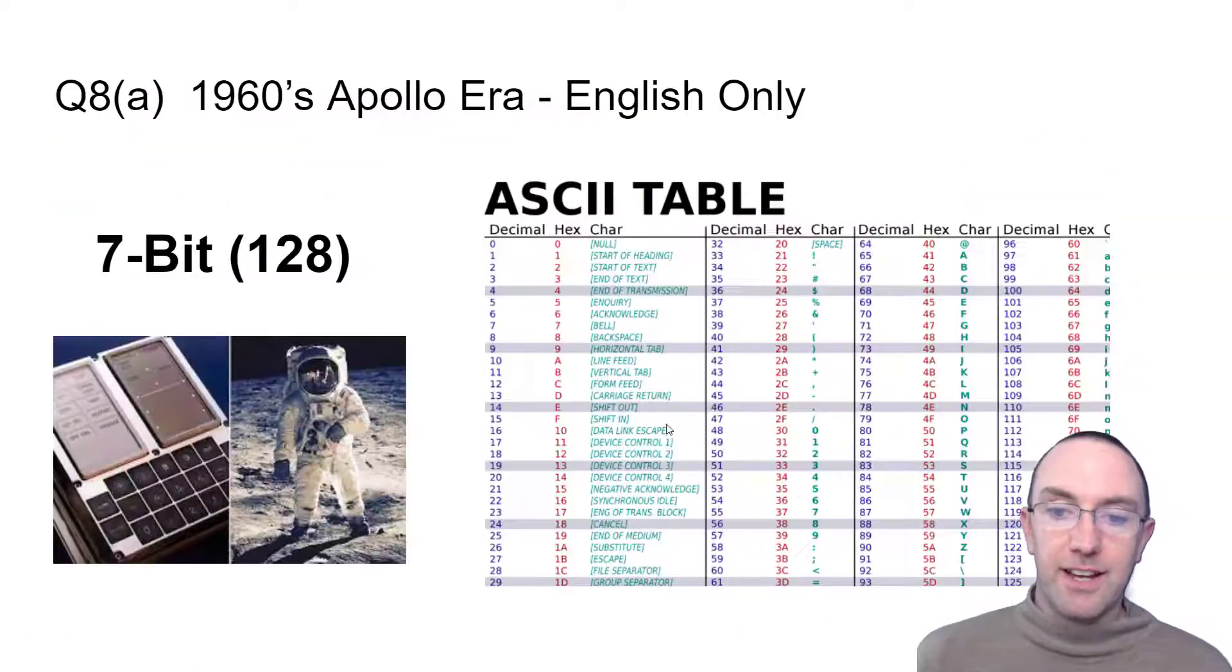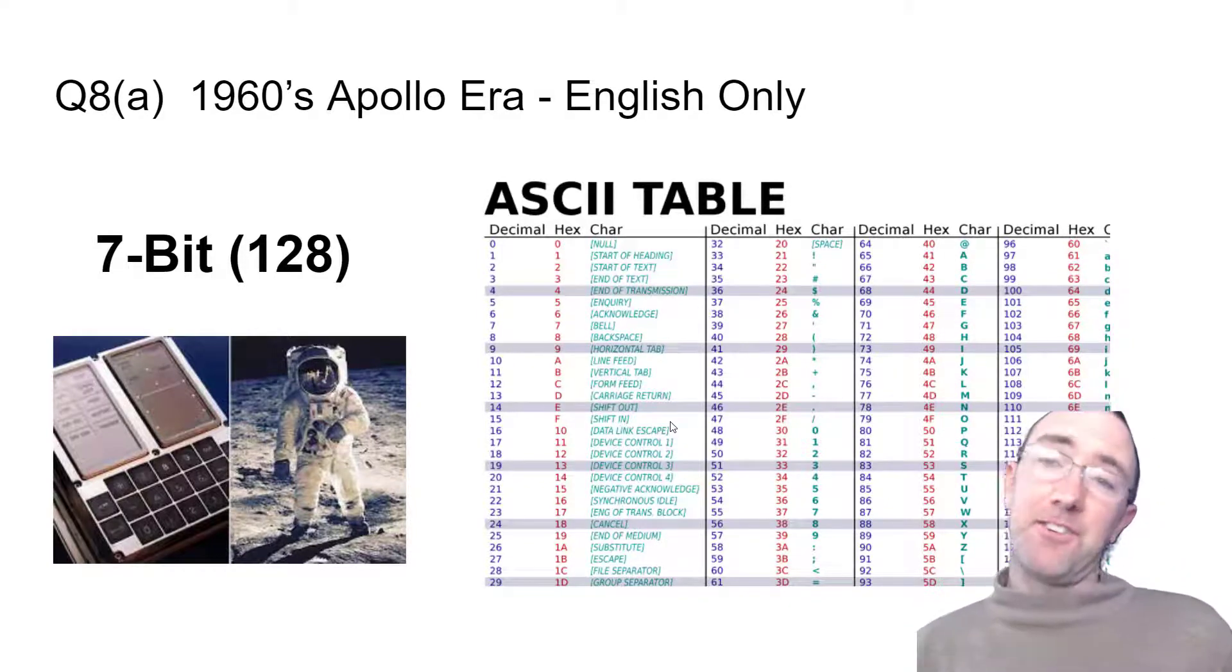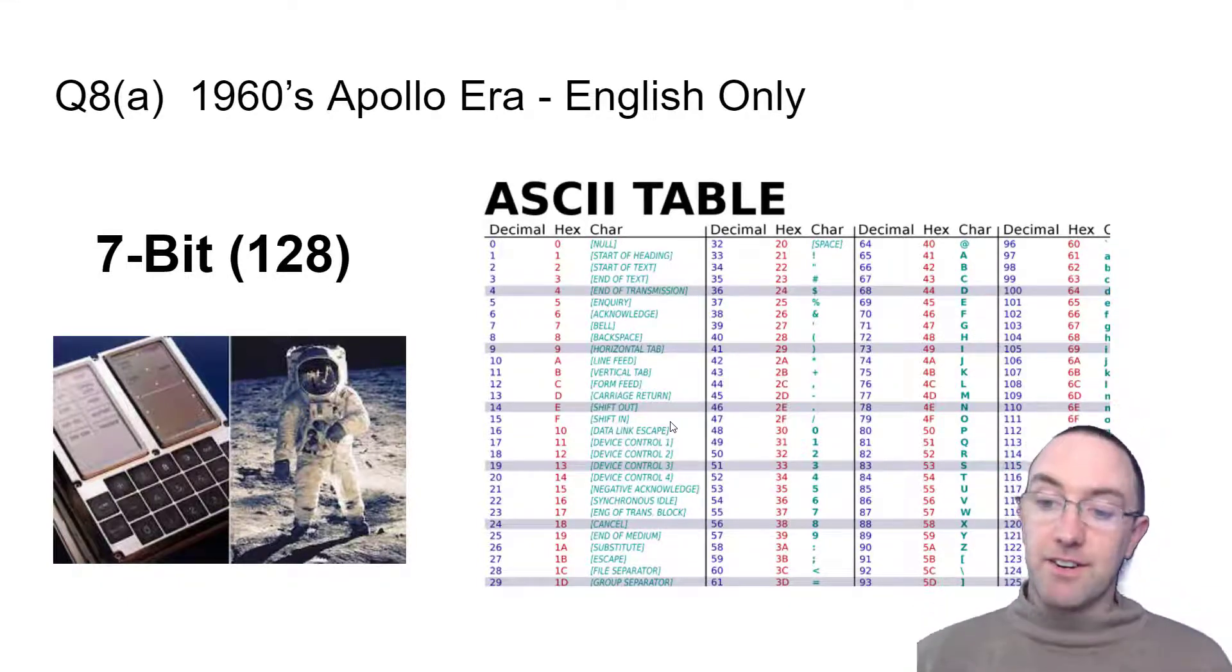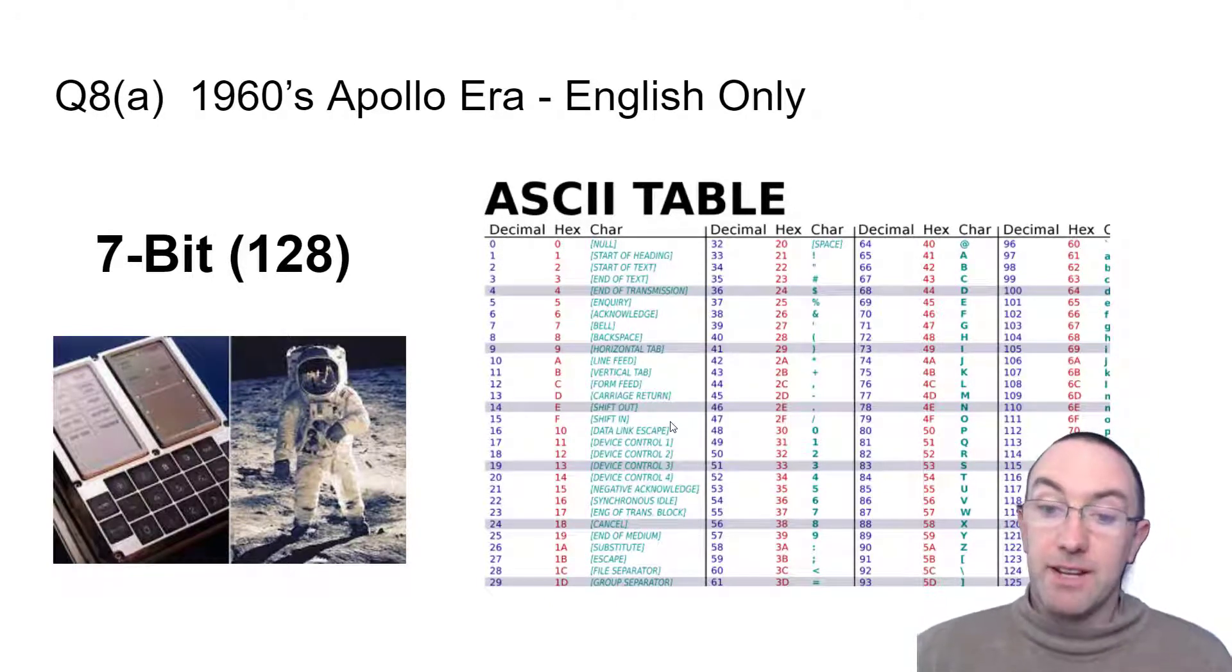We're talking like Apollo era 1960s. It's really kind of the first attempt at combining language and computers, ones and zeros in a standard way that we all agree. There were a lot of competing different systems, but for English, for American, UK, Ireland kind of English speaking parts of the world, this was the first attempt.